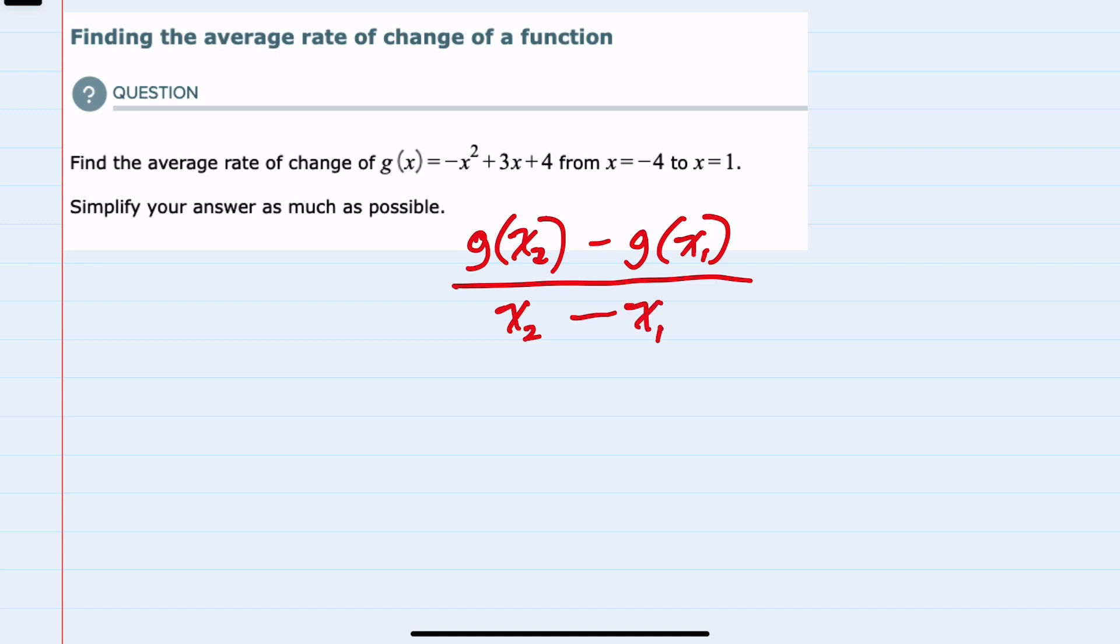Going left to right, I will call negative 4 my x₁ and 1 my x₂. To substitute in, I will first find g(x₂), x₂ being 1, so g(1) equals, replacing x with 1, negative 1 squared plus 3 times 1 plus 4.